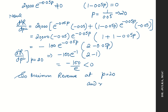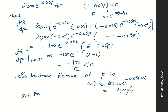At p equals to 20, x equals to 20,000 into e raised to the power minus 0.05 into 20, which equals to 20,000 divided by e. And maximum revenue equals to p into x, where p is 20 and x is 20,000 divided by e. After calculation, we get 4,00,000 divided by e. This is the maximum revenue.